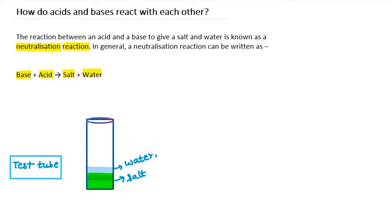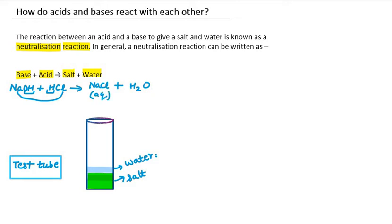Let's give a simple example: if base is sodium hydroxide and acid is HCl, then the product will be NaCl in aqueous solution. So NaCl, sodium chloride, is my salt, and water is also formed. This is the base, this is the acid. When base and acid react, they form salt plus water, and therefore this reaction is known as a neutralization reaction.